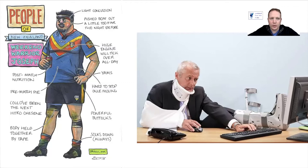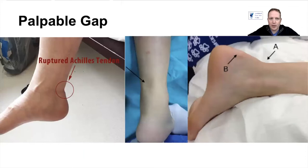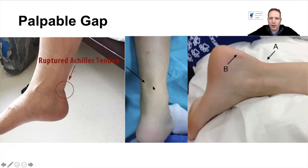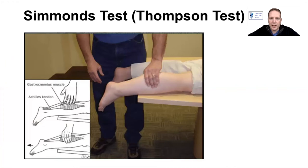So this is your weekend warrior — someone who only commits to sport once or twice a week. You get a palpable gap. It's not always apparent because sometimes the swelling, such as in a case like this, would not show you the gap. So if there's swelling on the back, you've got a low threshold of suspicion, as this is also a potential Achilles rupture.